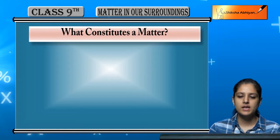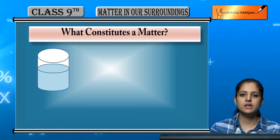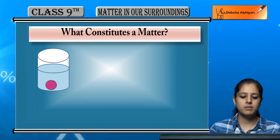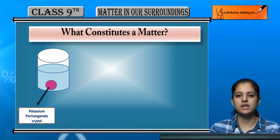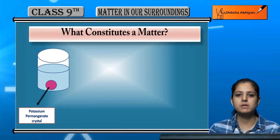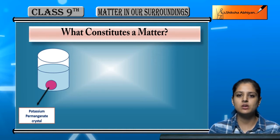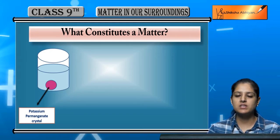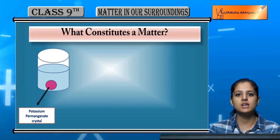Let us conduct an activity. We have a beaker. In this beaker, I added a crystal of potassium permanganate. A crystal of potassium permanganate is a purple color crystal. You can imagine it as an ink drop. If you don't know what potassium permanganate crystal is, imagine that we have an ink drop.